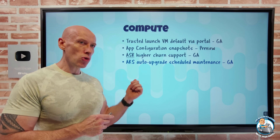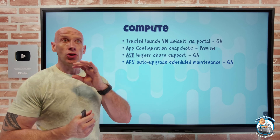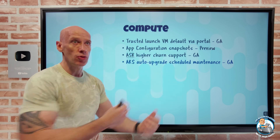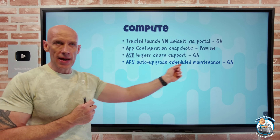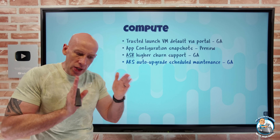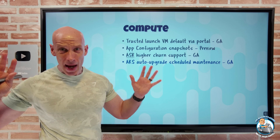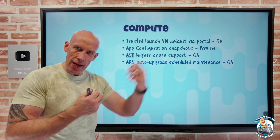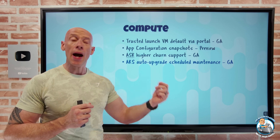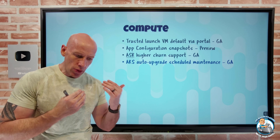AKS now has auto upgrade with scheduled maintenance, which is super powerful. You want to auto upgrade dev/test first and make sure you've tested your app before applying it to production. Now I have scheduled maintenance windows, so those auto upgrades will only happen within the window I define, helping minimize impact to production workflows. Although upgrades typically cordon off nodes, drain them, and do a rolling upgrade anyway, I probably don't want that happening in the middle of production. Outside that window, it won't make any changes.